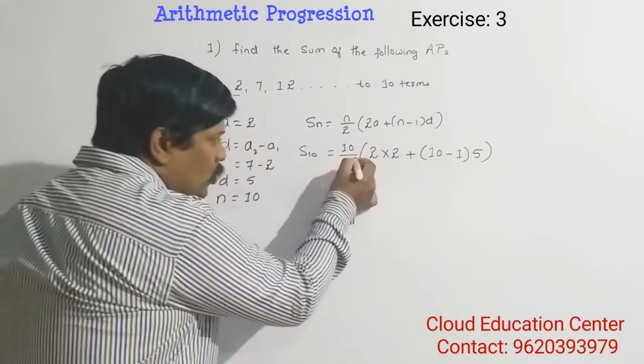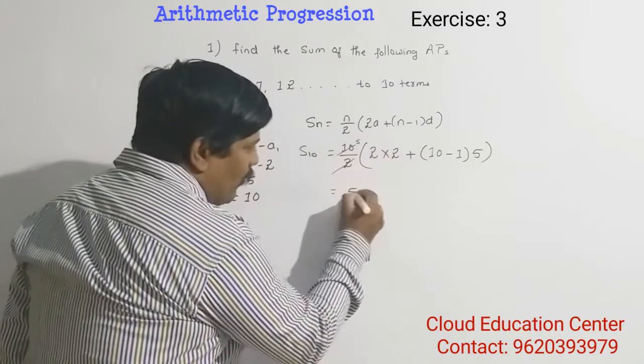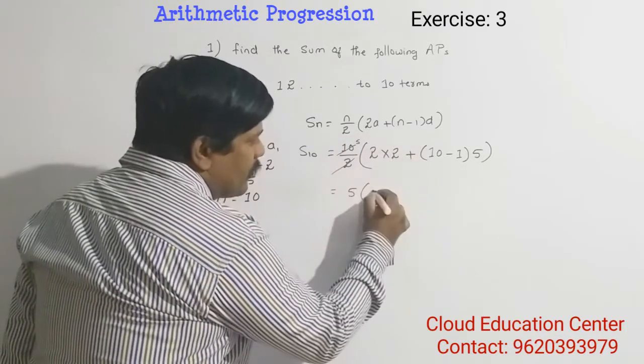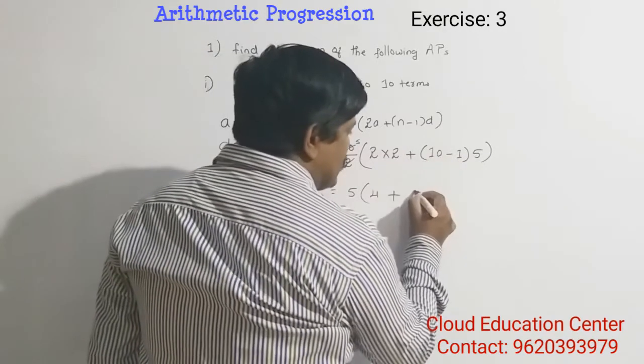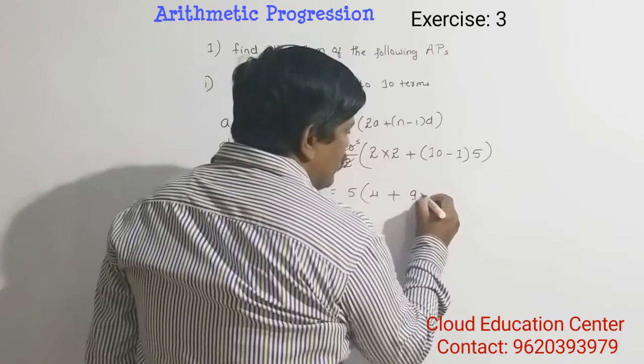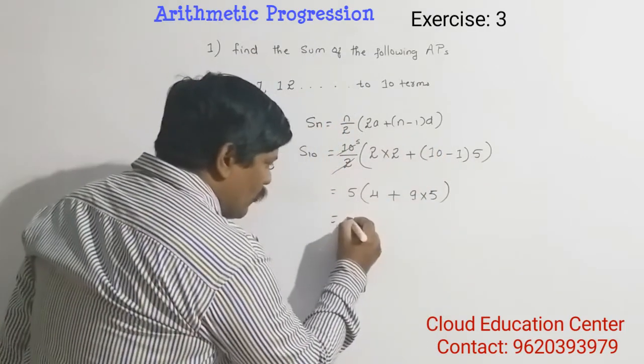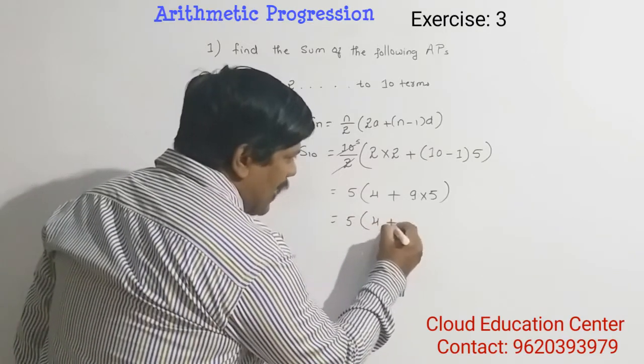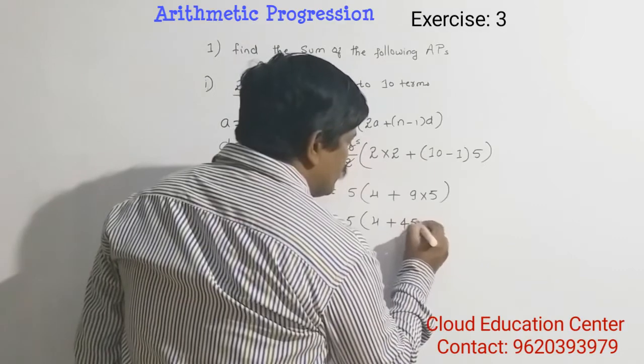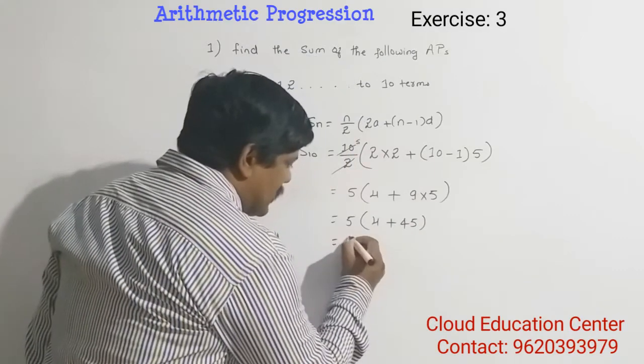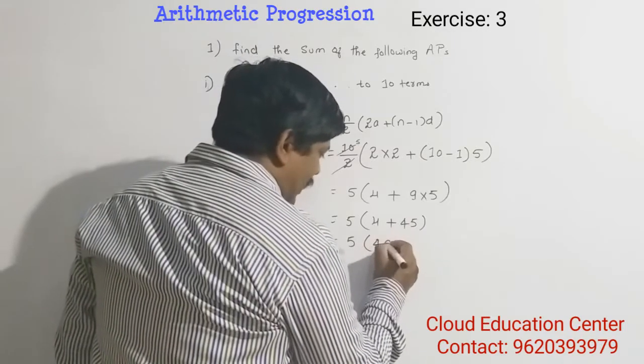Now, it is 5, 2A is 4, and 9 times 5 is 45. It is nothing but 5 times, 4 plus 45 is nothing but 49.